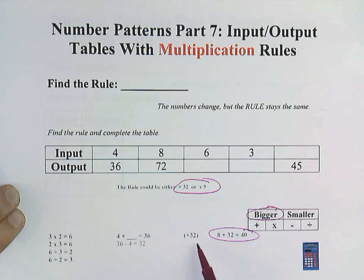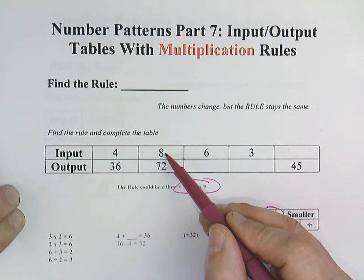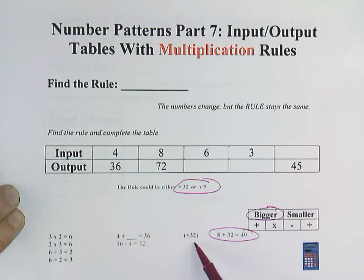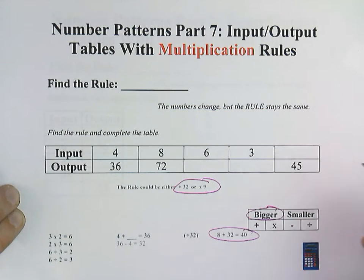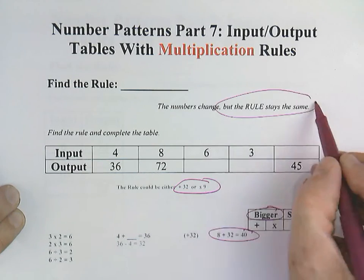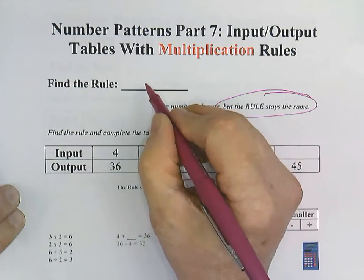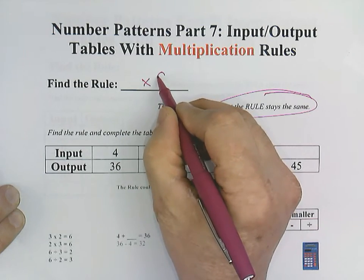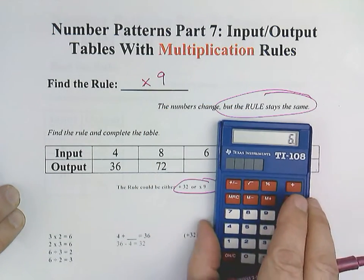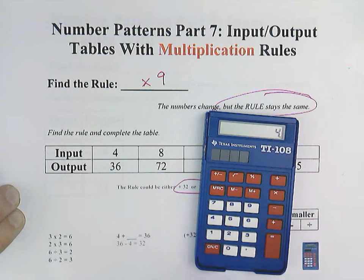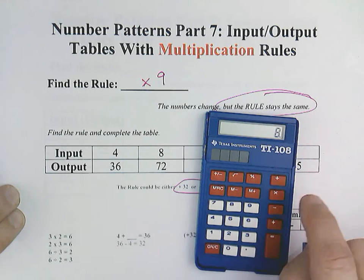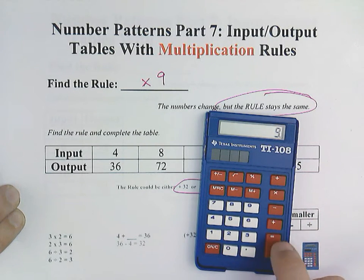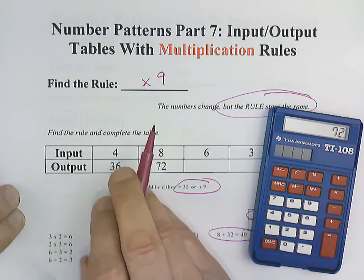We can eliminate the plus 32 rule. And here's why. 8 plus 32 would be equal to 40 and not 72. So that's probably the hardest thing with these is you just have to be able to eliminate. And the reason why we can eliminate is that the rule must be able to stay the same. And we'll prove that by using our times 9 rule. Let me just show that here. So 4 times 9 equals 36. 8 times 9 equals 72. So we've confirmed that.